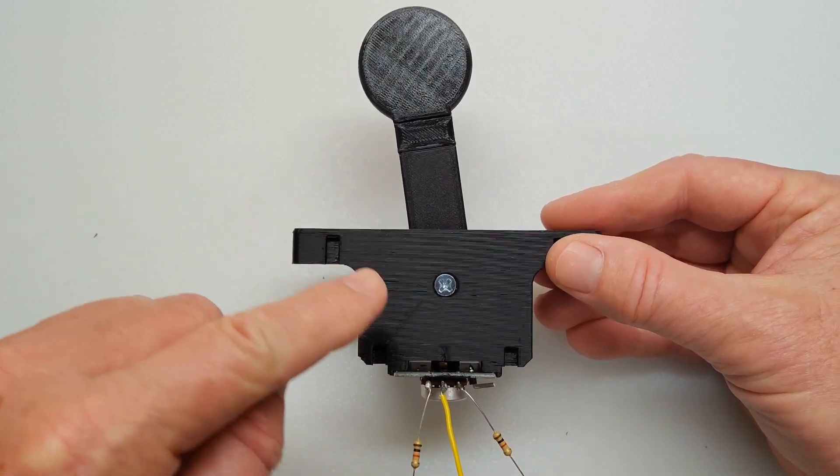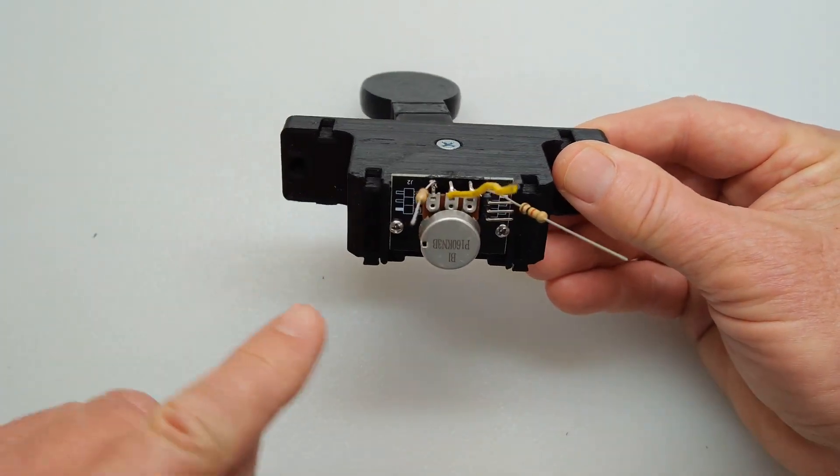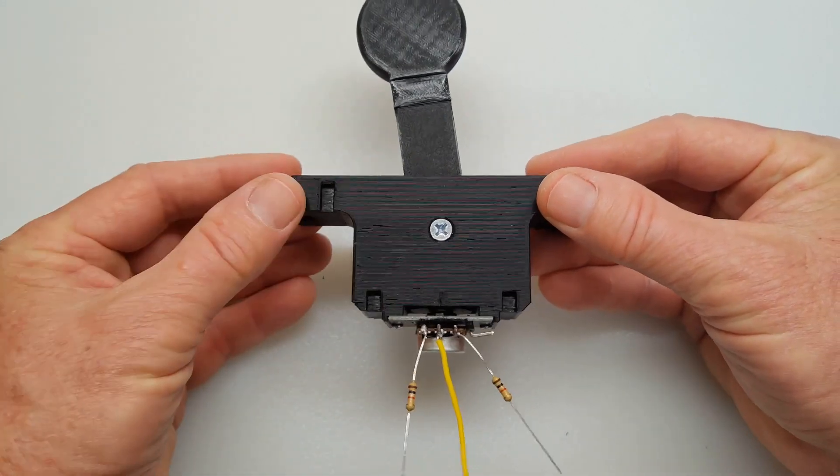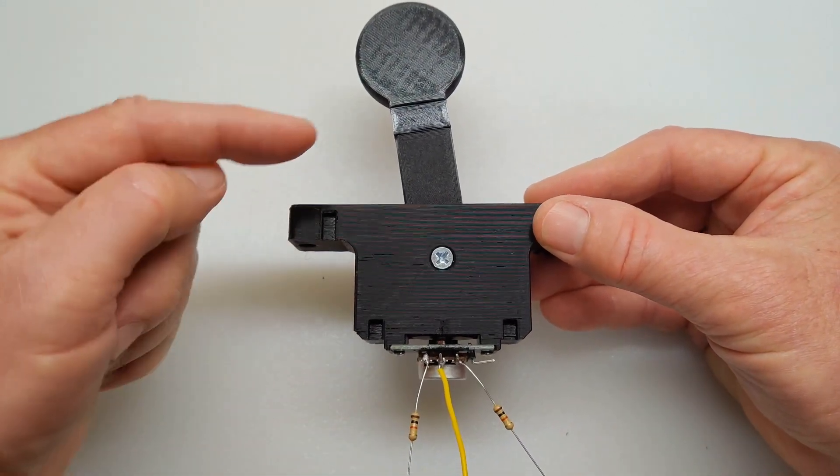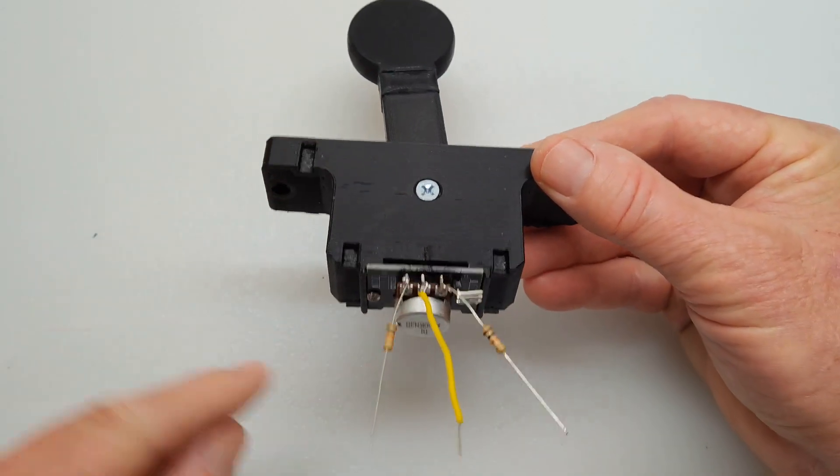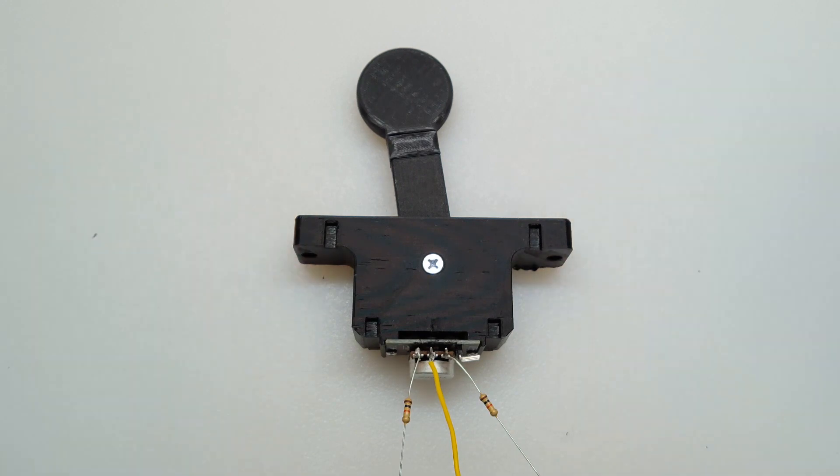Once I know where the zero point is here, with everything set up, I'm just going to carefully unscrew the pot and pull it out with the gear. Once I do that, I will move the lever to the true zero position and then reinsert the pot with the gear, put it all back together, and I will have a zero at the lever position.